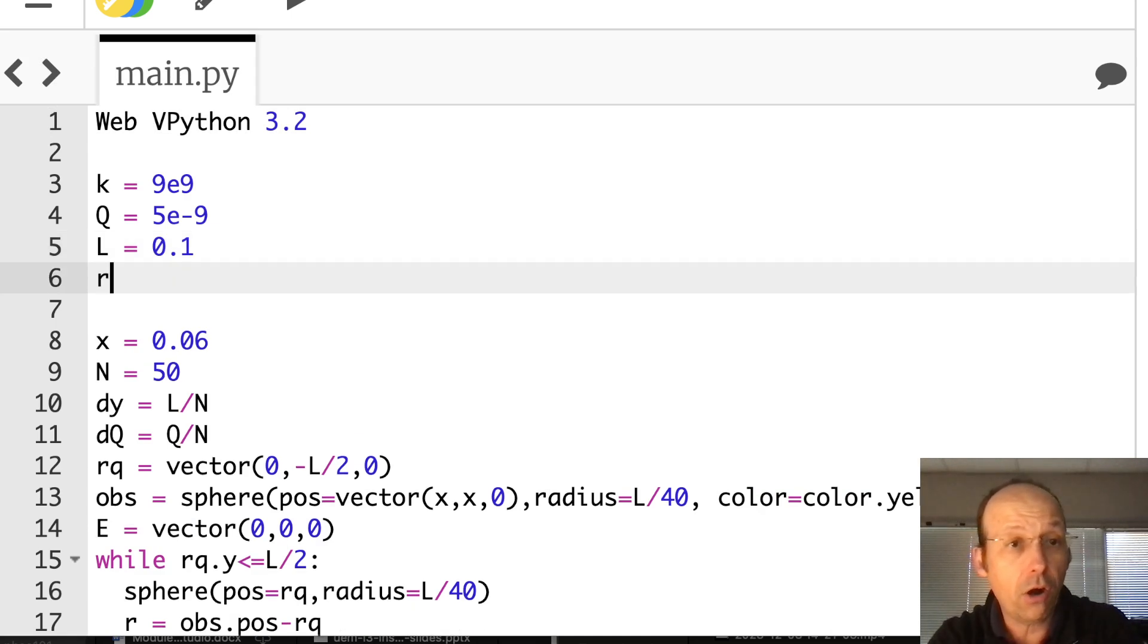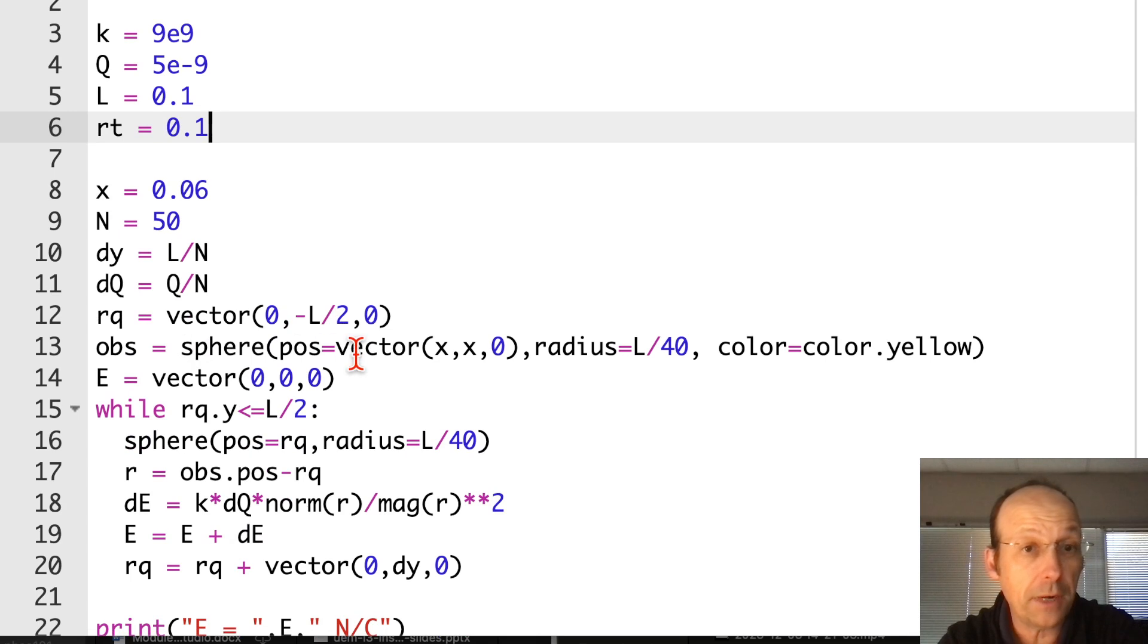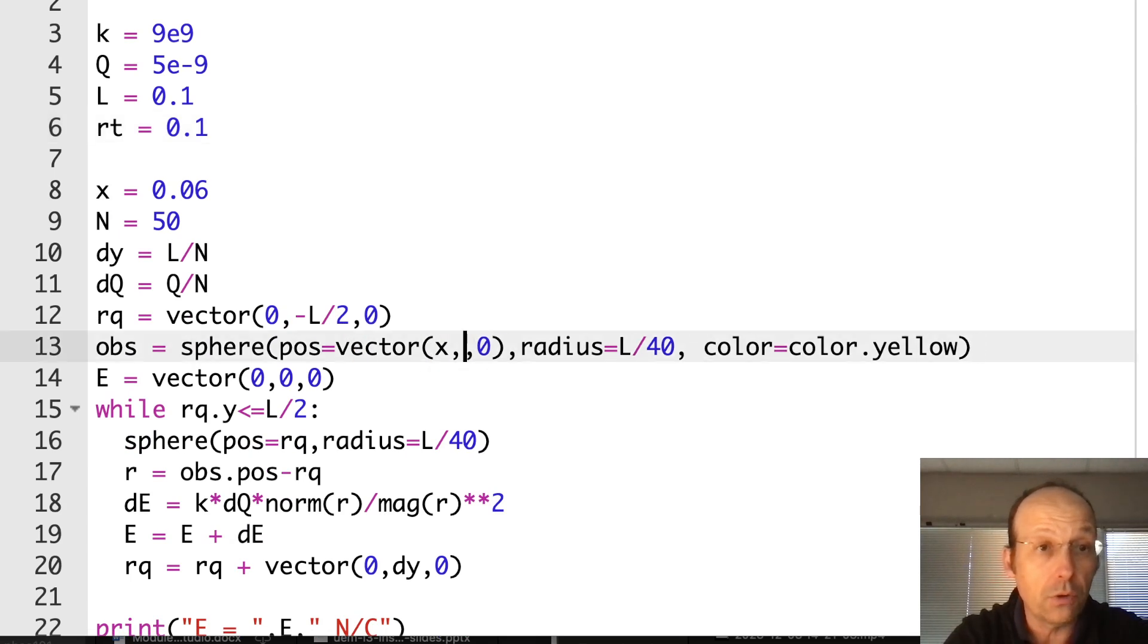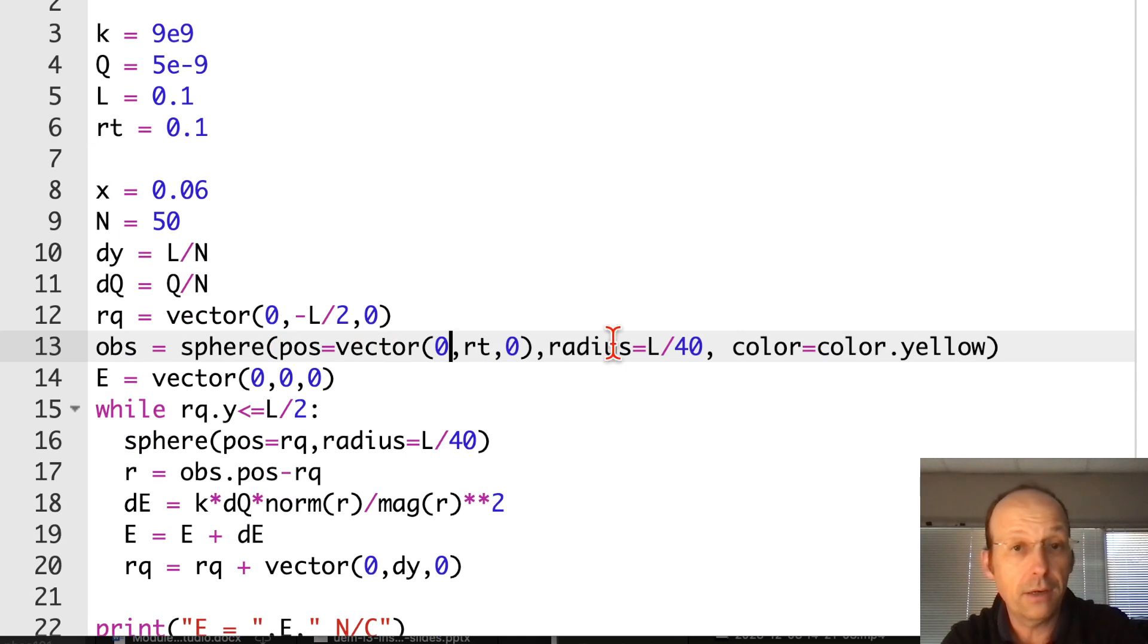So here I have a length of 0.1. Let's say r temporary, that's just my scalar value is 0.1 also, because the rod goes from negative L over 2 to L over 2. So it will be further away. I just need to change my observation location to RT0, right there. And that's it. That's all I have to do.